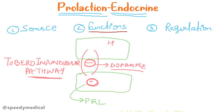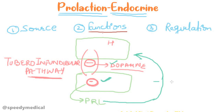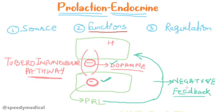When prolactin is in excess, it acts via the same tuberoinfundibular pathway to stimulate the hypothalamus to produce and release more dopamine, which in turn inhibits its own secretion. This is the negative feedback mechanism by which prolactin is regulated.